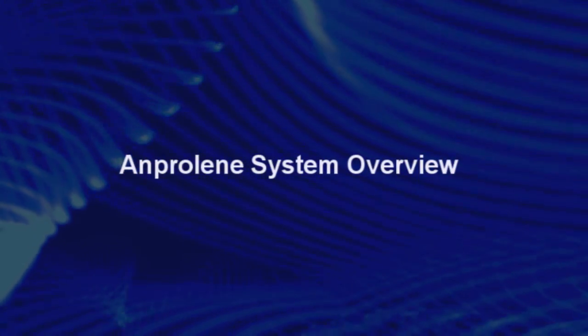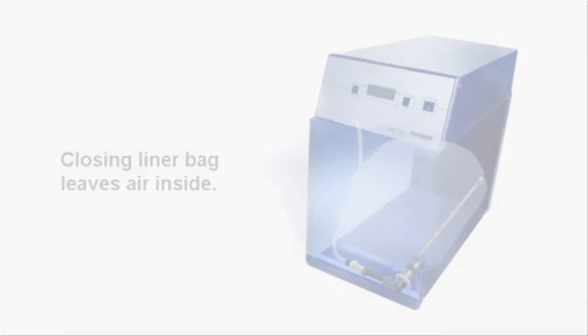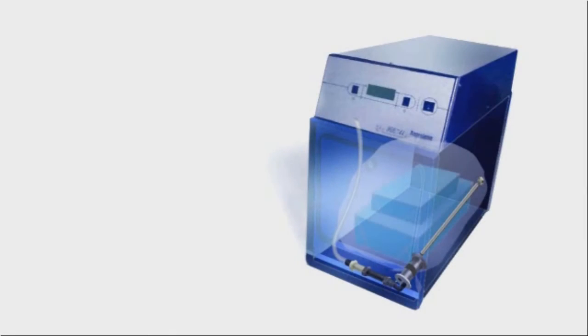The following diagram shows a cutaway of a loaded Anprolene sterilizer. The cycle starts with a purge process that removes excess air from the sterilization liner bag.